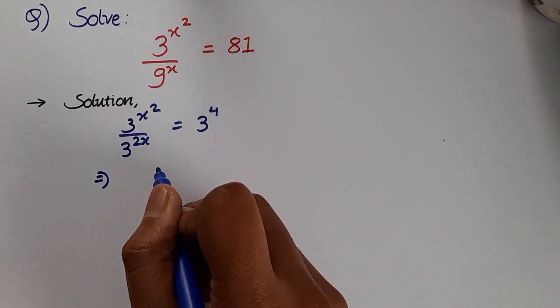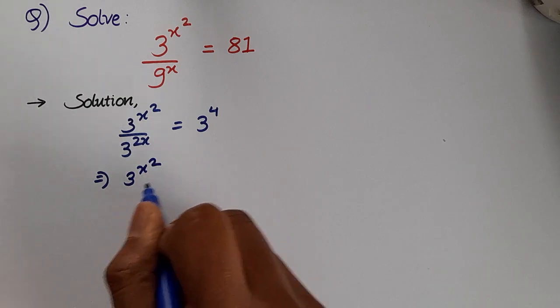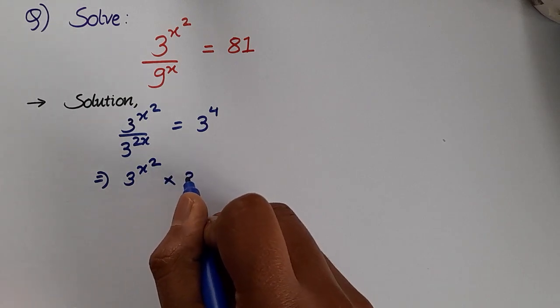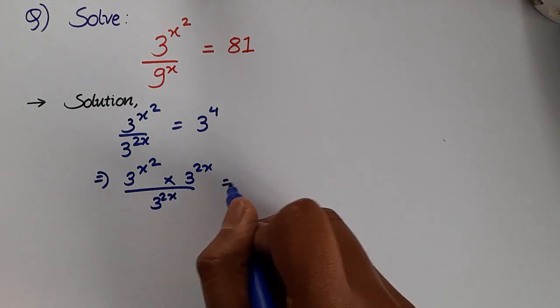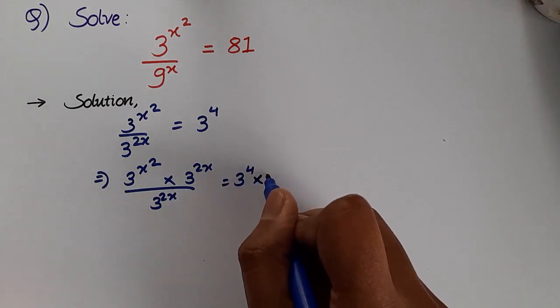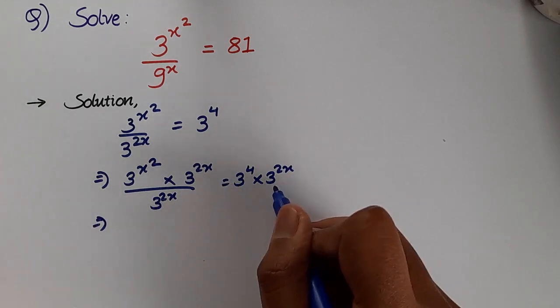This can further be written as 3^(x²) times 3^(2x) over 3^(2x) equals 3^4 times 3^(2x). We are multiplying by 3^(2x) on both sides.